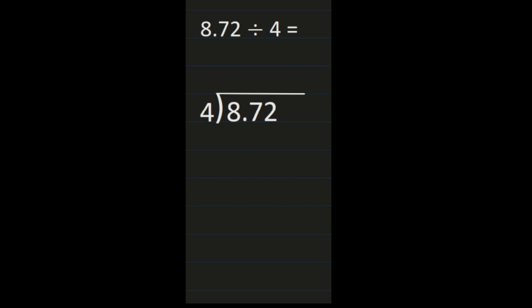Our first example we have 8 and 72 hundredths divided by 4. So the 8 and 72 hundredths goes on the inside because we're dividing that by 4, which will be placed on the outside. Then our first step is to bring our decimal point straight up so that it's in the correct place in our quotient, so that as we work step by step and digit by digit through our division steps, the decimal point is in the right place.